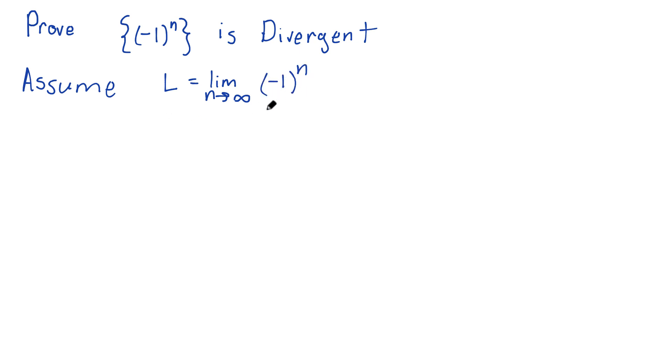What would this mean? What's the definition of this? Well, this means that for all epsilon greater than 0, there exists some N such that for all n after that N, the absolute value of negative 1 to the n minus its limit is less than epsilon. That's just the definition of a sequence converging to a limit L.